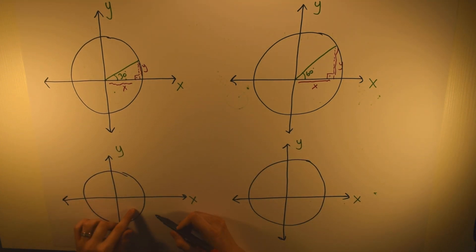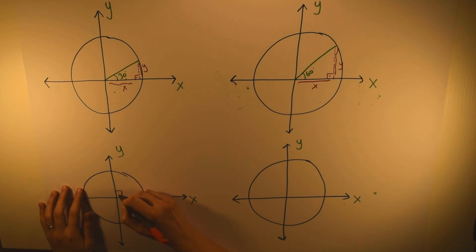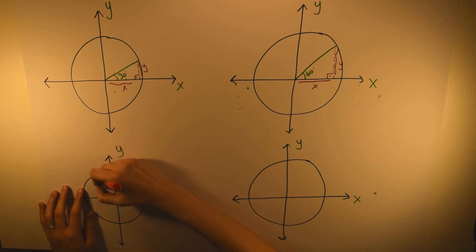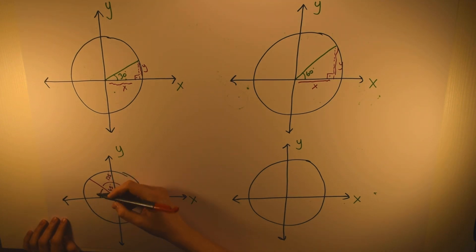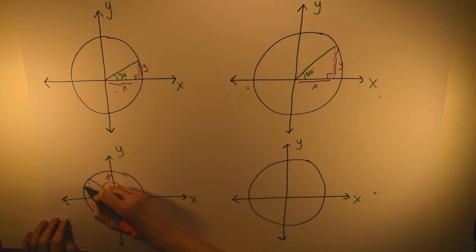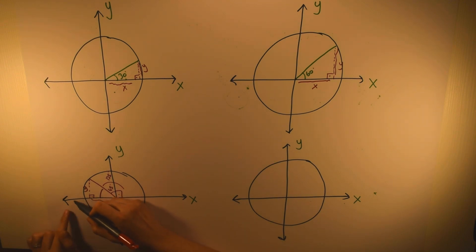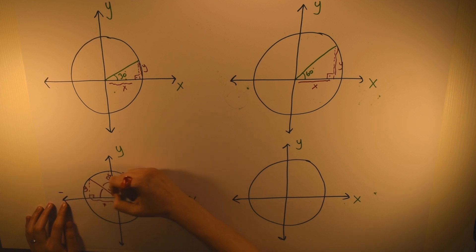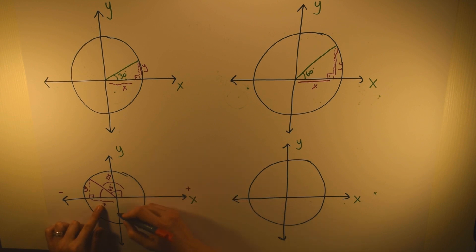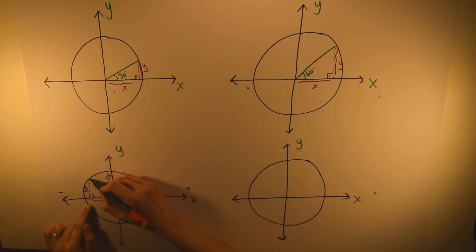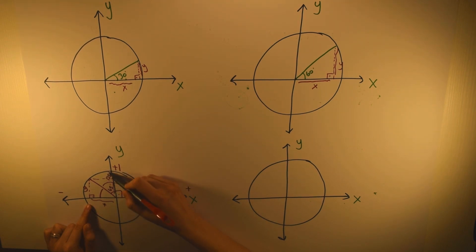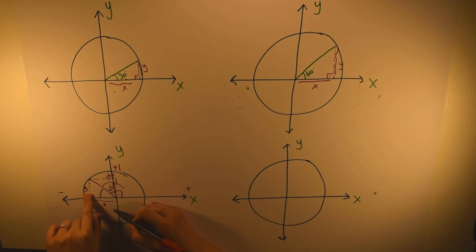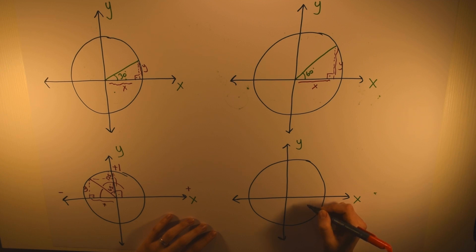For 135 degrees — that's 90 degrees plus 45 degrees — drawing the right triangle, the length of x is negative because we are on the negative side of the x-axis, while y is still positive. So at 135 degrees, x is negative and y is positive.